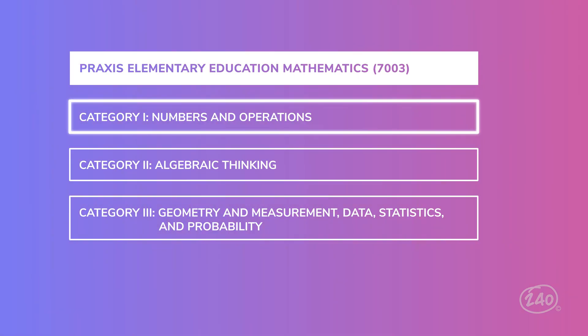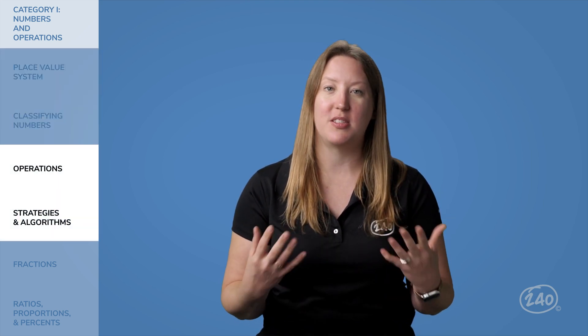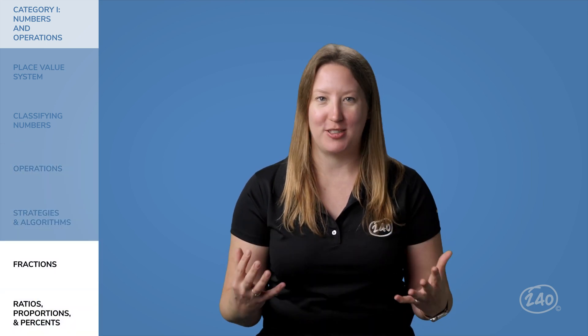The first category we'll look at is numbers and operations. This section has 16 questions — that's 40% of the exam. The key areas you'll focus on here include number theory, like place value and classifying numbers; operations and using algorithms to solve problems; and working with fractions, ratios, proportions, and percents. Our guide translates these from math language and breaks them down into what you actually need to know.